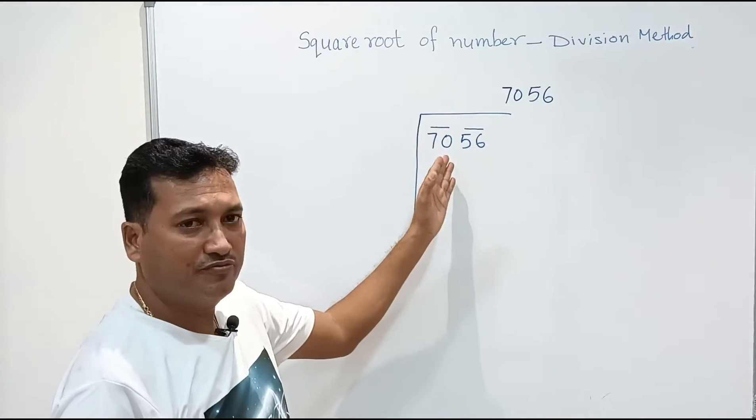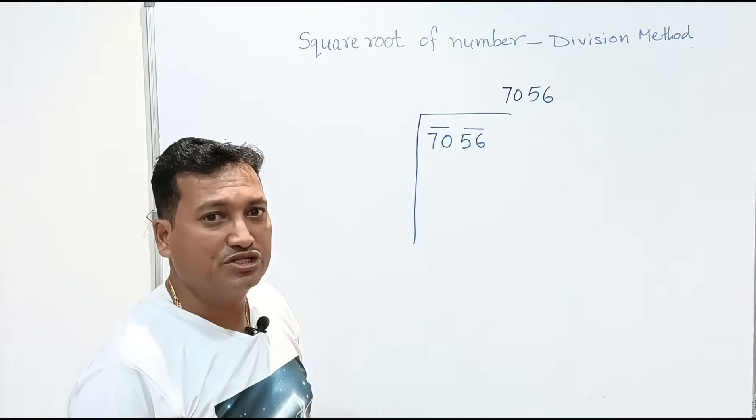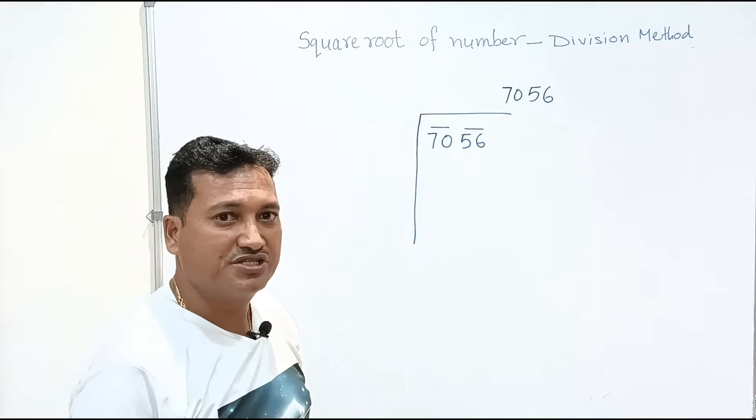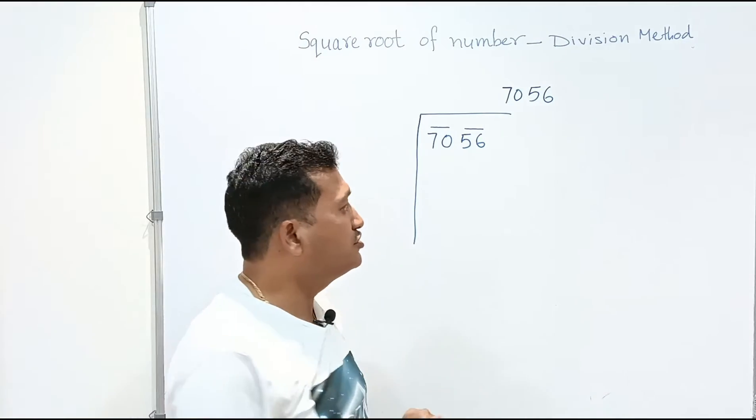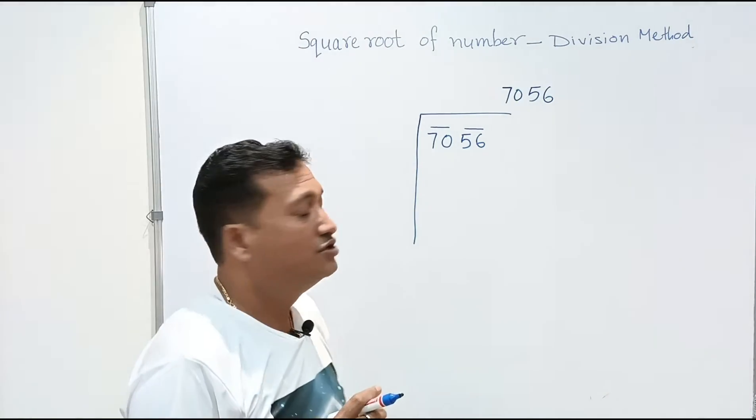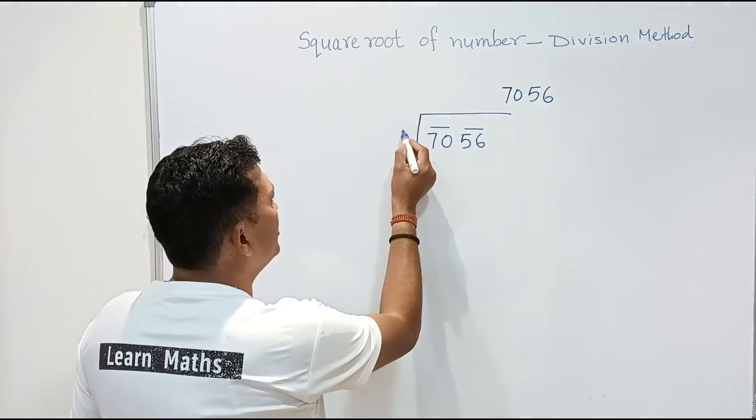There are many numbers before 70 that is 69 but it is not a perfect square, 68, 67, 66, 65, 64. 64 is a perfect square of 8. So we need to take divisor over here 8.